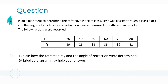In question two we are told about this experiment using the refractive index of glass. We're going to be passing light through a glass block and measuring the angle of incidence and the angle of refraction. We're also given a table with different angles for I, which is our angle of incidence, and different angles for R, which is our angle of refraction.